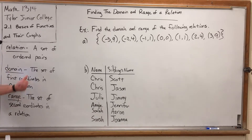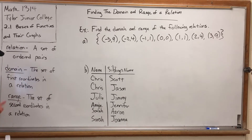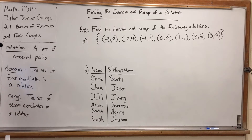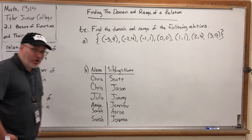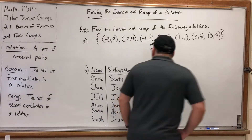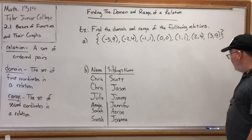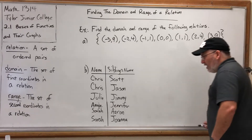The domain of a relation is the set of first coordinates, or the set of x-coordinates. The range is the set of second coordinates, or the set of y-coordinates. So for each of these relations, let's list the domain and range.